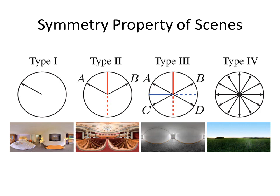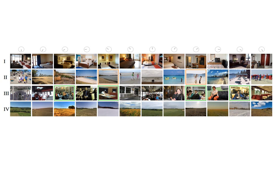We also study the symmetry properties of place categories. We define four common types of symmetry in real-world environments. Type 1 symmetry is no symmetry at all. Type 2 symmetry is bilateral symmetry with one axis — the elements on either side of the symmetry axis are mirror images of each other. For example, if you flip this panorama horizontally, you can obtain the same image. Type 3 symmetry is bilateral symmetry with two axes. Type 4 symmetry is isotropic symmetry, which means that all views look the same.